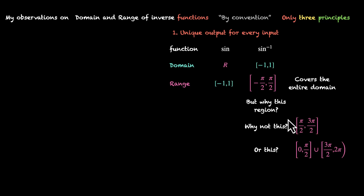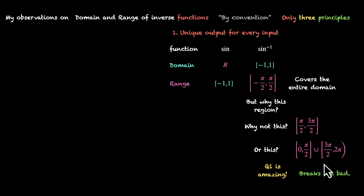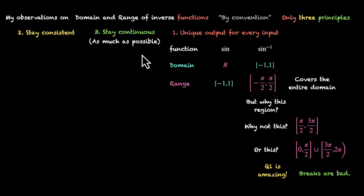Let me share what I think. We pick this set over the others because quadrant one is amazing. In the alternative set, the range for positive values of sine is the second quadrant, but in our chosen set the range is the first quadrant. Now this only works for sine, but taking the first quadrant for all positive values will work for all trigonometric ratios — so this helps us stay consistent. And the reason why I pick this set over the one with 3π/2 to 2π is because breaks are bad. Minus π/2 to π/2 is a smooth, continuous set — no gaps. The other option also uses first and fourth quadrant but with a break in between, missing the second and third quadrant before jumping back to the fourth. So the second principle is: we like to stay consistent. And the third is: we like to stay continuous — as much as possible.